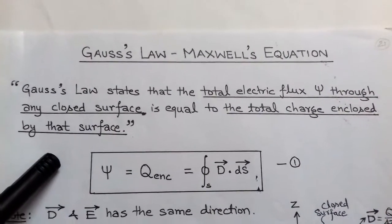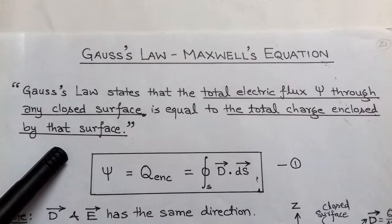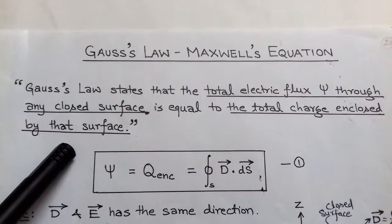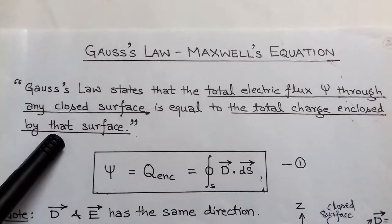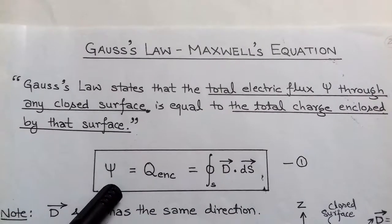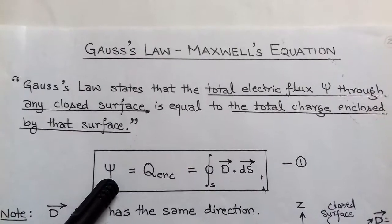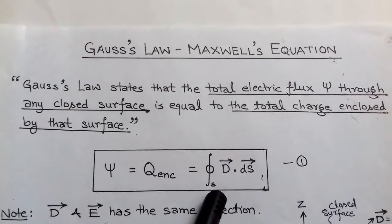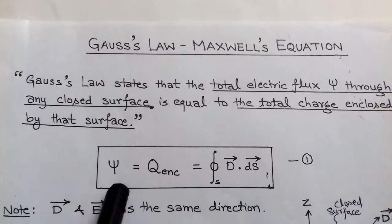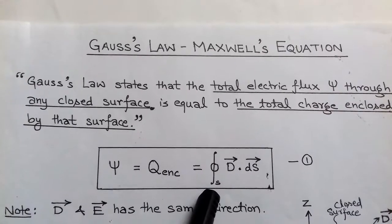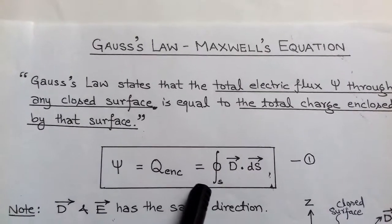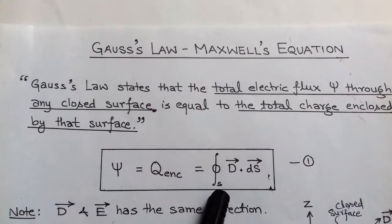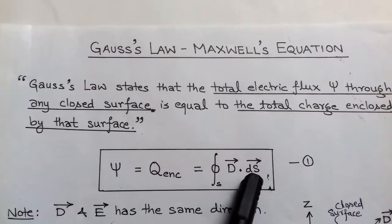We consider a closed surface and inside that closed surface we consider an enclosed charge, and due to that charge an electric flux is created. The total electric flux through any closed surface equals the charge enclosed. The mathematical representation is equation 1: psi equals total charge enclosed, which equals the closed surface integration of D dot dS.